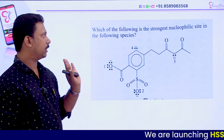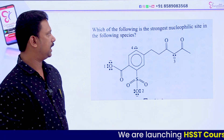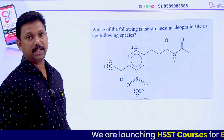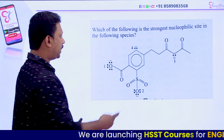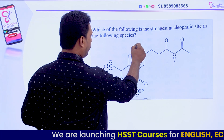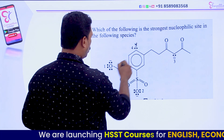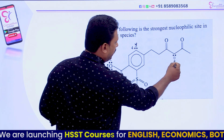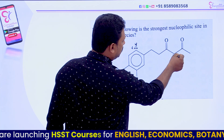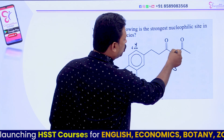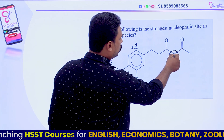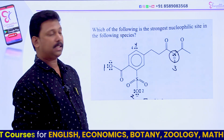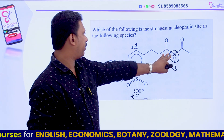These are both molecules. Let's talk about which of the following sites is the strongest nucleophilic site. Here are the numbered positions: number 8, number 4, number 1, number 2, number 3. This is a CS2 group. Two electron pairs are denoted because that nucleophilic site is marked.